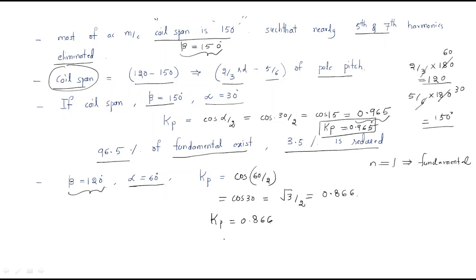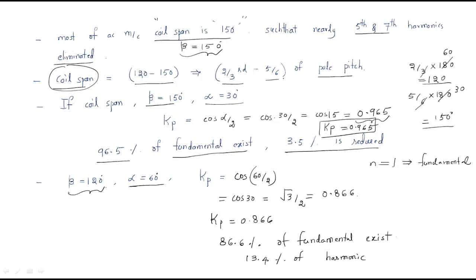The meaning of kp = 0.866 is that 86.6 percent of the fundamental will exist. The remaining 13.4 percent consists of harmonic content. This illustrates the importance of the pitch factor: when using a short pitch coil, the total fundamental is reduced but harmonics are eliminated, and harmonics have a greater effect on system magnitudes.